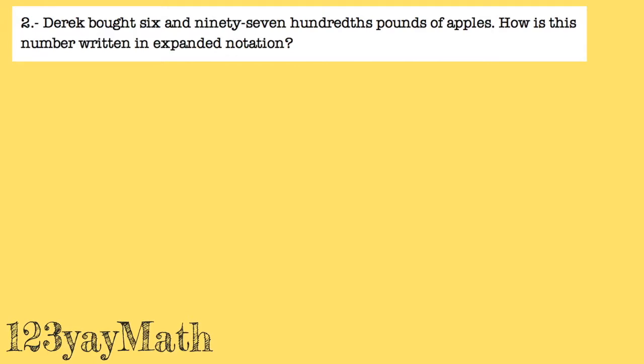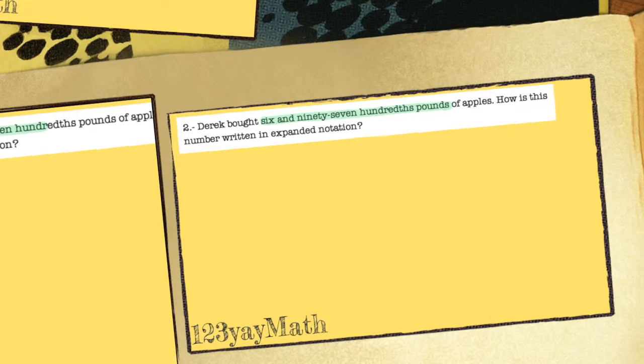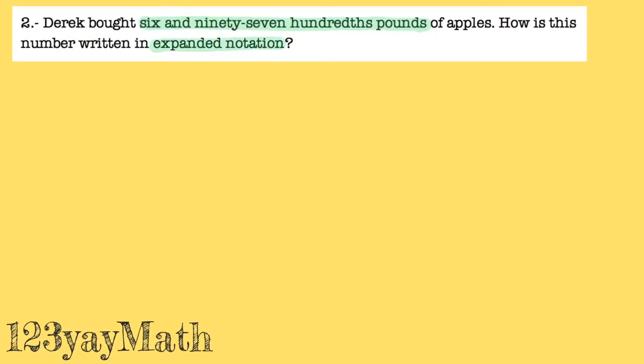Okay, let me find my keywords. I'm gonna use green. So they're about six and ninety-seven hundredths pounds of apples. How is this number in expanded notation?